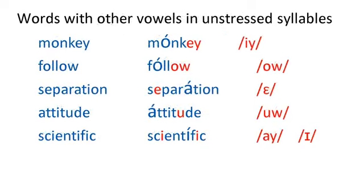But not all unstressed syllables sound like schwa. Other vowels can be in unstressed syllables too, like e in monkey, o in follow, eh in separation, oo in attitude, and i in scientific. These unstressed syllables also need to be small and weak.